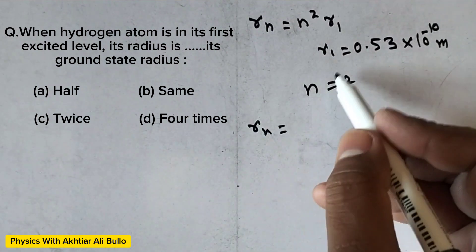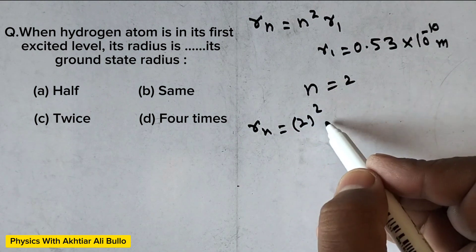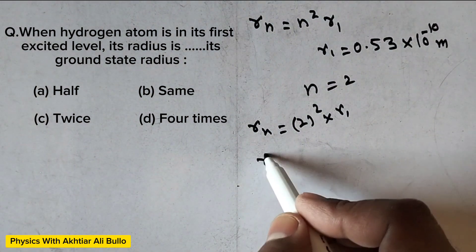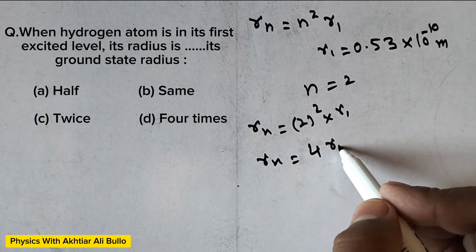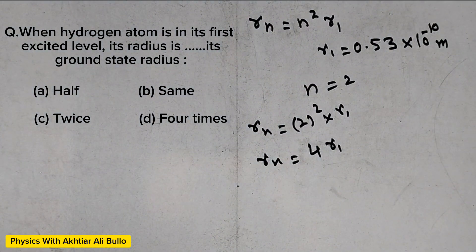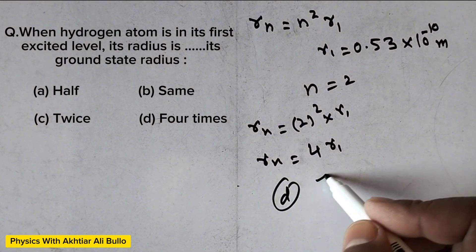rn will be equal to n square means square of 2 into r1, so rn will be equal to 4r1. So the correct option will be d, 4 times.